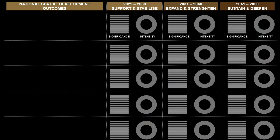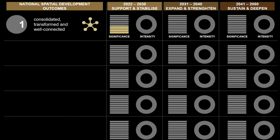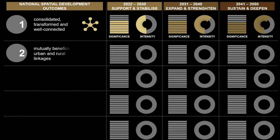The NSDF seeks to achieve the following spatial outcomes. National Spatial Outcome 1: a network of consolidated, transformed and well-connected national urban nodes, regional development anchors, and development corridors that enable South Africa to derive maximum transformative benefit from urbanization, urban living, and inclusive economic development.